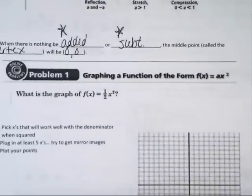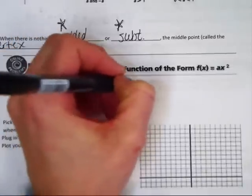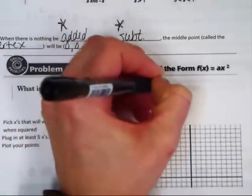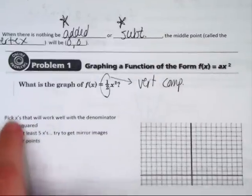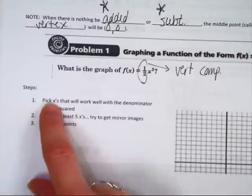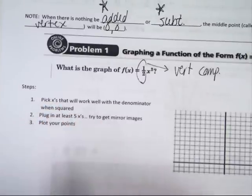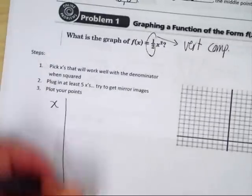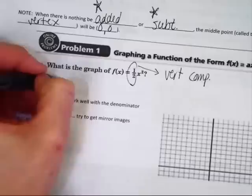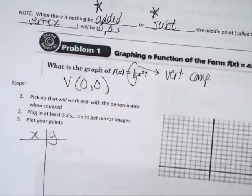Let's look at problem 1. What is the graph of f of x equals 1 half x squared? See this 1 half? That means it's going to be vertically compressed. You should remember that from absolute values. Now take a look at what I encouraged you to do. Pick x's that work well with the denominator 1 squared. Plug in at least 5 x's. Try to get the mirror images. Plot your points. Take a look at my chart that I'm going to make. I know because nothing is being added or subtracted, I know my vertex is going to be 0, 0.